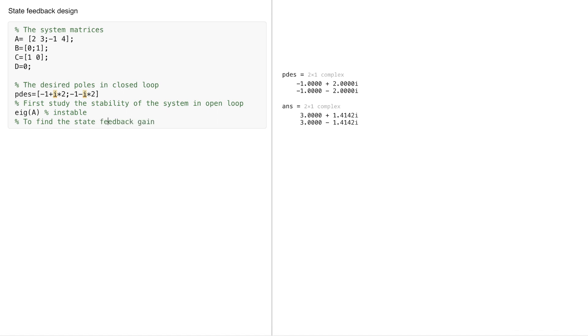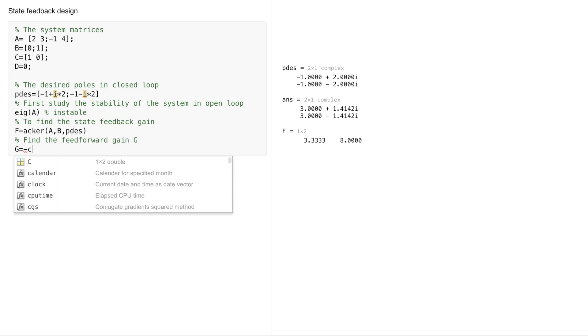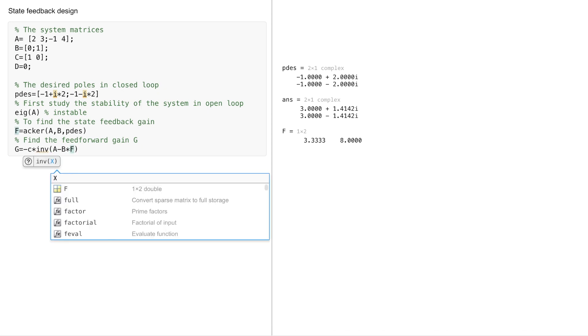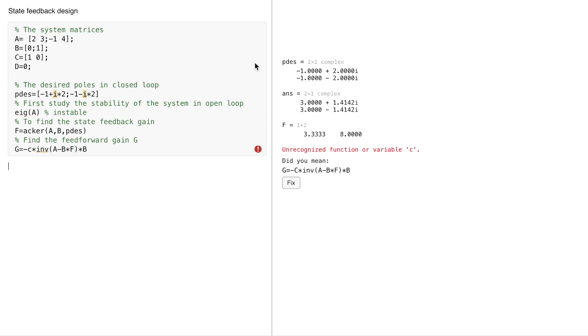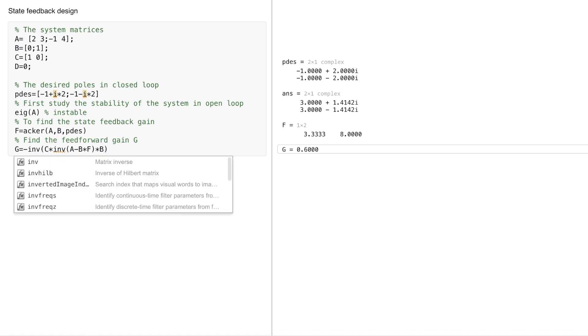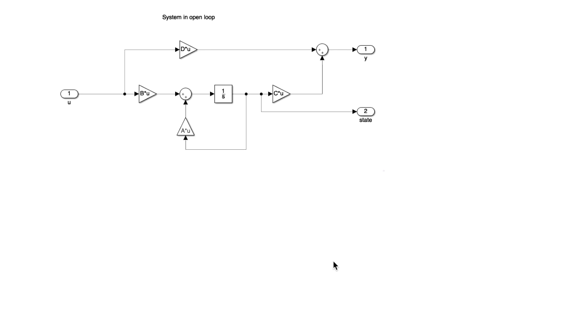To find the state feedback gain, we use acker with a, b and the desired poles, and we have found this f, it is a vector. And we can find the feedforward gain g using the expression. I will put minus c times the inverse of a minus b times f already calculated times b. Here I forgot to put c, I have to put big C, and we have also to put the inverse, so we find 1.6.